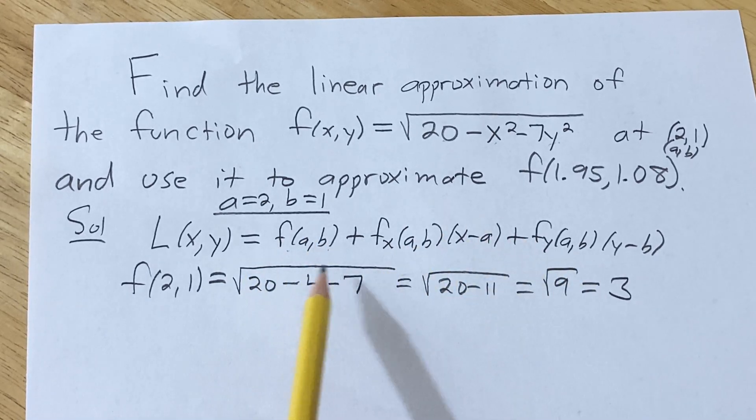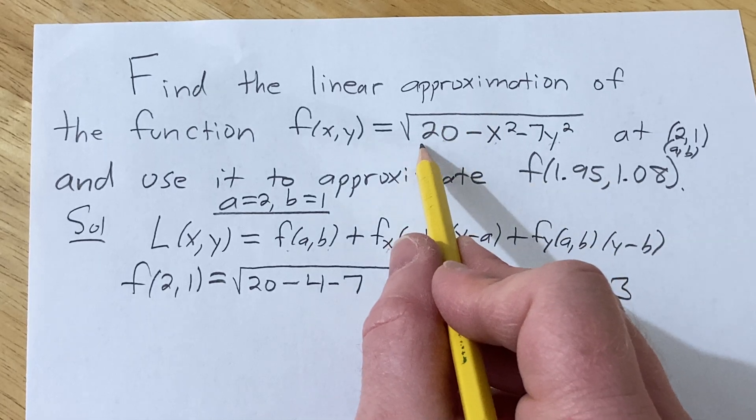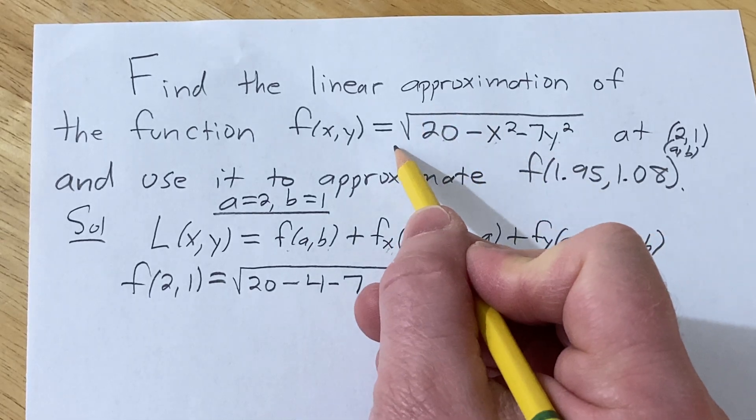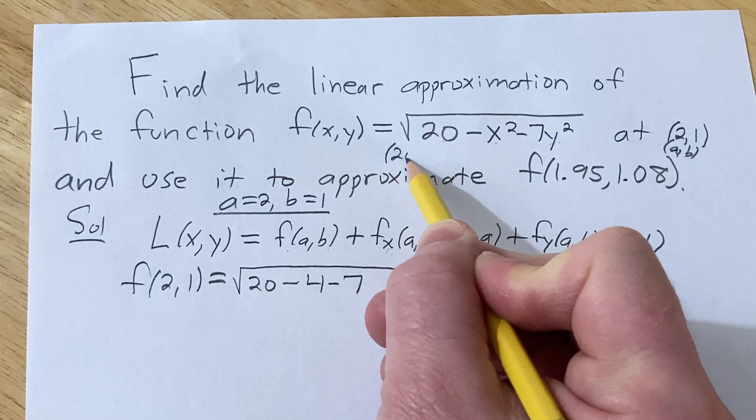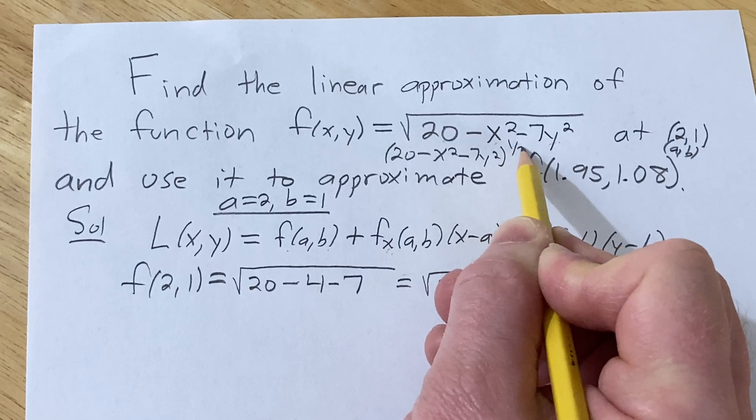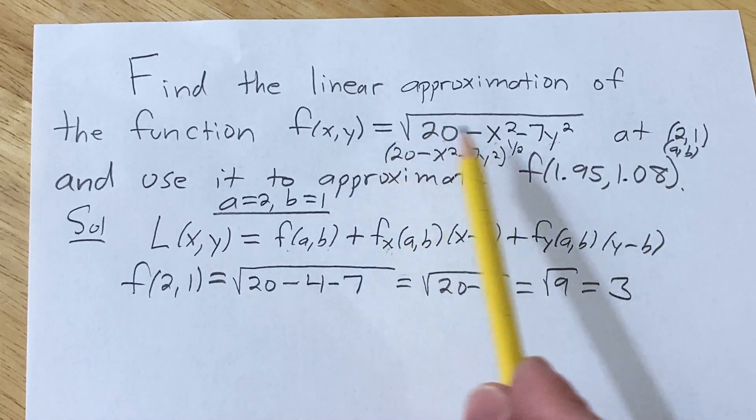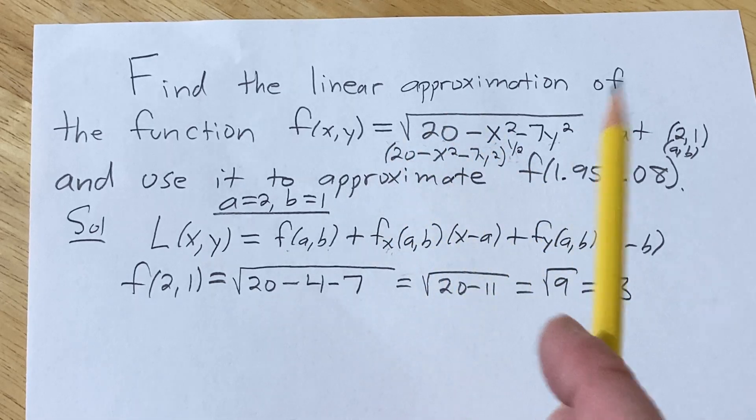Now we have to find the partials. So to find the partials, we're going to want to rewrite this first. We can think of this as (20 - x² - 7y²)^(1/2). You want to think of it that way so you can differentiate it.